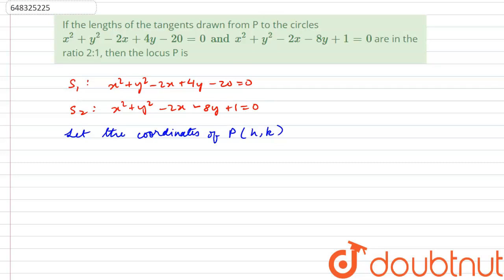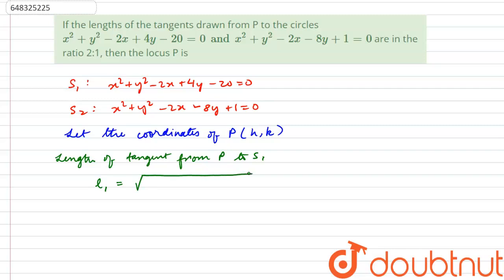We need to find the lengths of the tangents from P to the two circles. The length of the tangent from P to S1, call it l1, is given by the square root of h² + k² - 2h + 4k - 20, obtained by substituting (h, k) into the equation of S1.